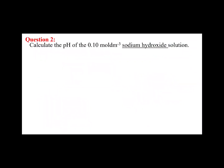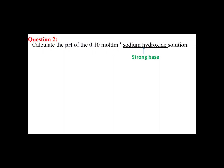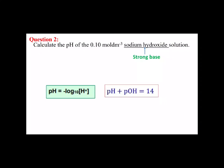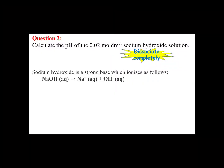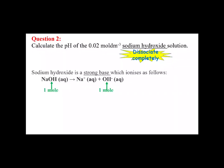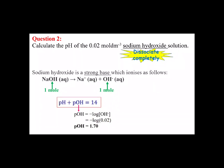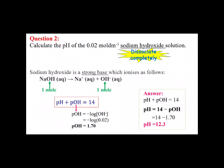Now, we will look at the question that shows how to calculate the pH of a strong base solution, which dissociates completely in water. Because this is a basic solution, we have to calculate pOH first. Since sodium hydroxide solution dissociates completely in water, the concentration of the sodium hydroxide solution equals the concentration of hydroxide ions after the reaction runs to completion. Since we know the concentration of hydroxide ions, we can use the following formula to determine the value of pOH. After that, plug the pOH value into the following equation. Lastly, the pH value of the 0.02 mol/L solution of sodium hydroxide is equal to 12.3.